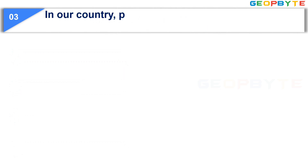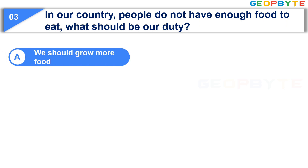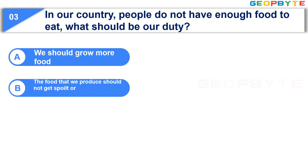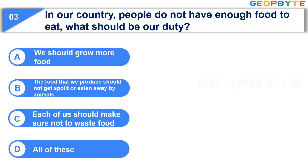The third question is: What should be our duty? Option A, we should grow more food. Option B, the food that we produce should not get spoiled or eaten away by animals. Option C, each of us should make sure not to waste food. Option D, all of these. Your time starts now.